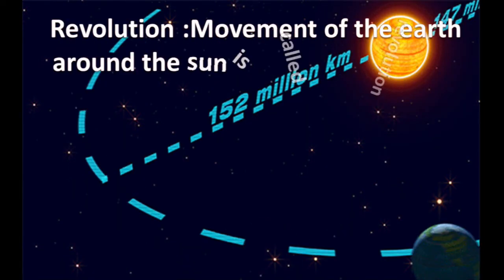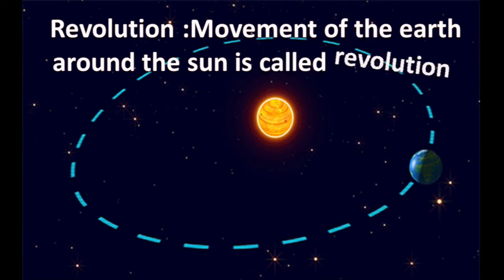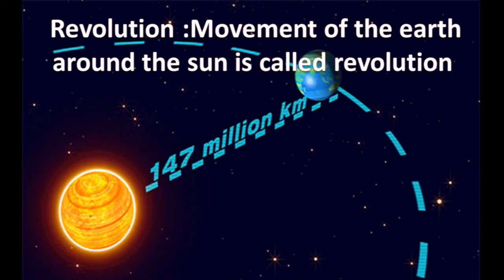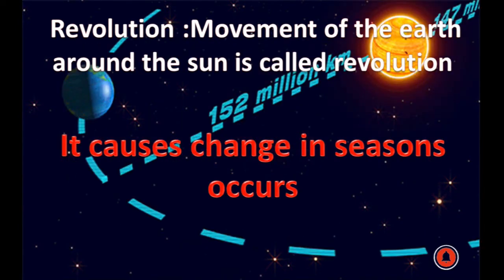The movement of the earth around the sun is called revolution. It causes a change in seasons.